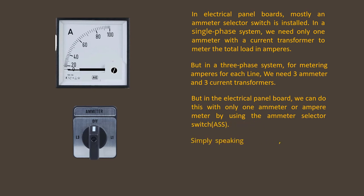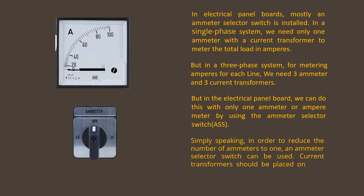Simply speaking, in order to reduce the number of ammeters, an ammeter selector switch can be used. Current transformers should be placed on each line, and the secondaries of the current transformers are connected to the ampere selector switch.